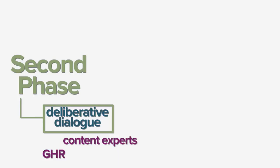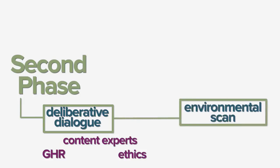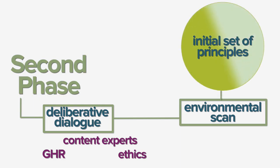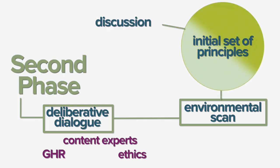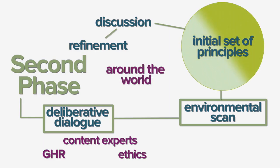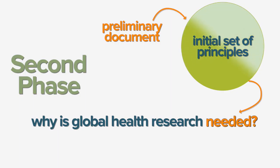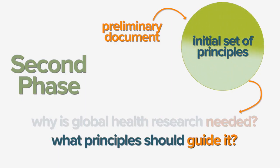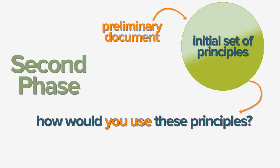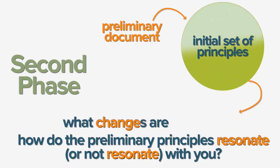A central focus of the second phase was the elaboration of guiding principles for global health research. We began with a deliberative dialogue attended by content experts in both global health research and ethics, using a comprehensive environmental scan to stimulate discussion around an initial set of principles for further discussion and refinement among groups across the country and around the world. Using this preliminary document as background, we asked: why is global health research needed? What principles should guide it? How would you use these principles? How do the preliminary principles resonate or not resonate with you? What changes are needed?